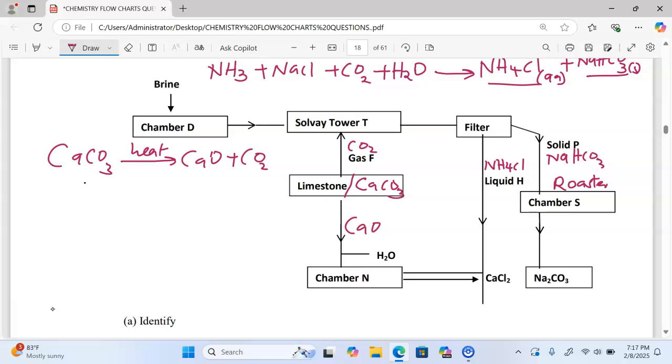Where it is heated to produce sodium carbonate. We can do an equation for what happens in chamber S. We have sodium hydrogen carbonate being decomposed. This is a carbonate, and therefore we are targeting sodium carbonate, plus carbon dioxide and water.